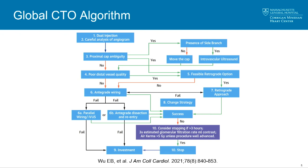The notable changes include: first, the use of parallel wiring; second, the use of IVUS as upfront strategies; third, the removal of ADR as a primary upfront strategy, repositioning it more as a bailout; fourth, criteria given for potentially stopping if not making progress; and fifth, stopping with an investment procedure.